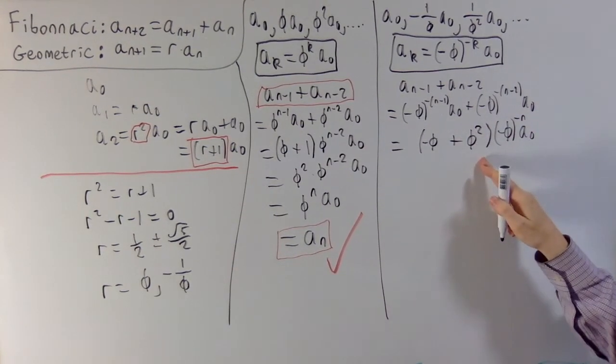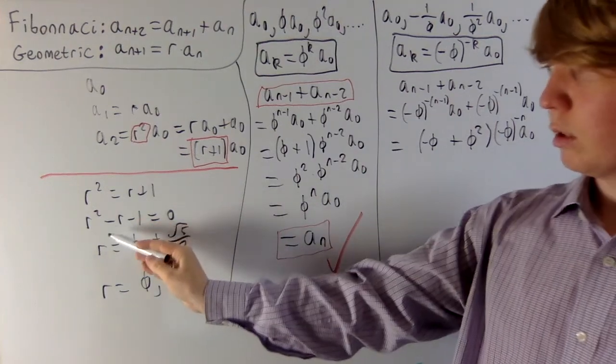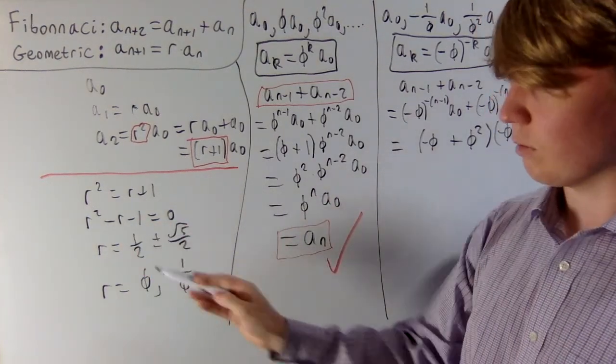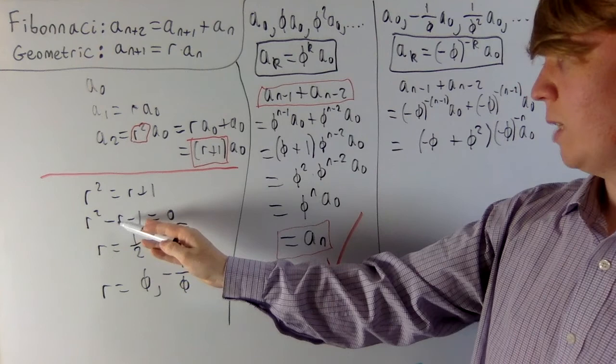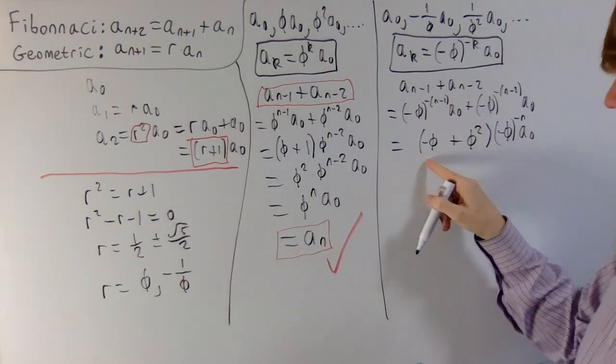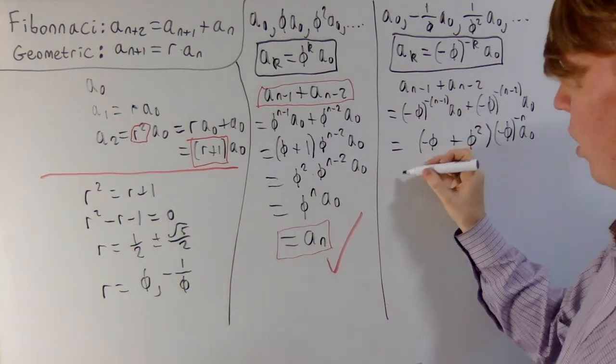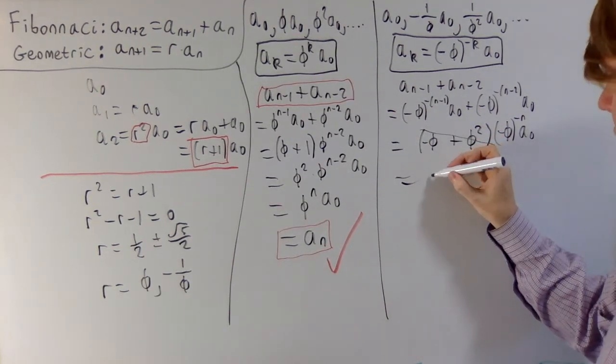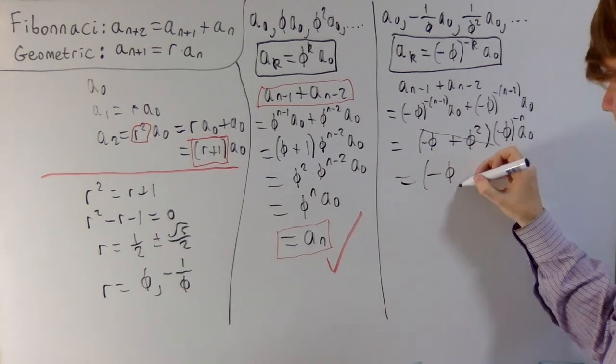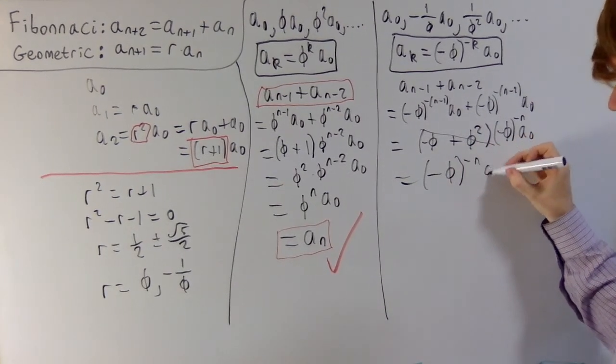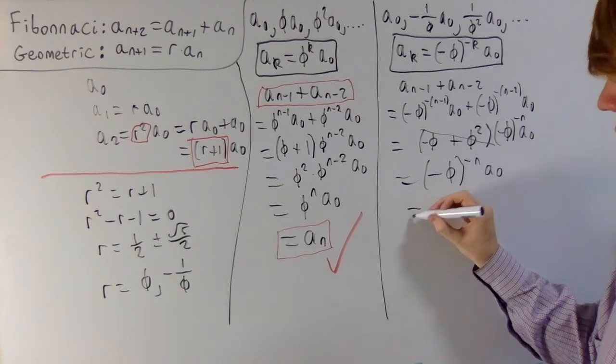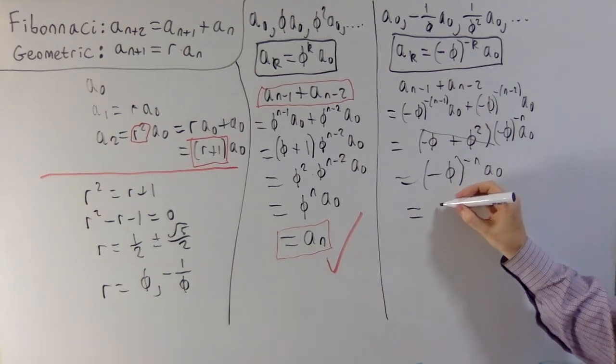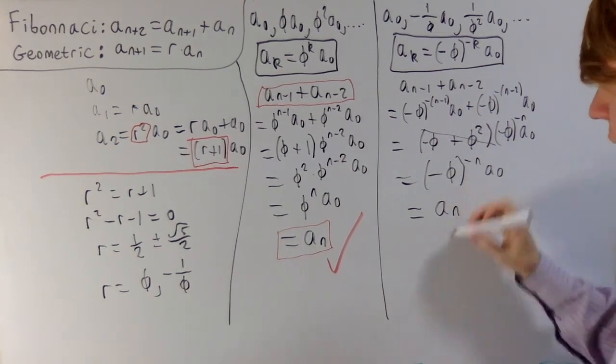Okay, so what do we do with this? Well, we can refer back to our original equation that phi, the golden ratio, satisfies. So phi squared minus phi minus 1 equals 0, so phi squared minus phi has to be equal to 1. So this term here actually just disappears. It's a 1. So then you're left with minus phi to the power of minus n, multiplied by a0. And this is, if you remember back to our definition for this sequence, this is indeed equal to a n.